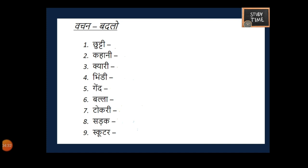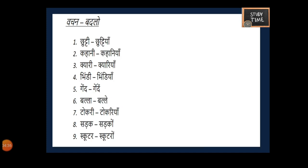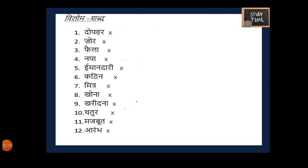The plural words are: Chutti — Chuttiyaan (holiday — holidays); Kahani — Kahaniyaan (story — stories); Kari — Kariyan (bed — beds); Bindi — Bindiyaan (ladies finger — ladies fingers); Gend — Gendein (ball — balls); Balla — Ballet (bat — bats); Tokari — Tokrian (basket — baskets); Sadak — Sadakein (road — roads); Scooter — Scooterein (scooter — scooters).